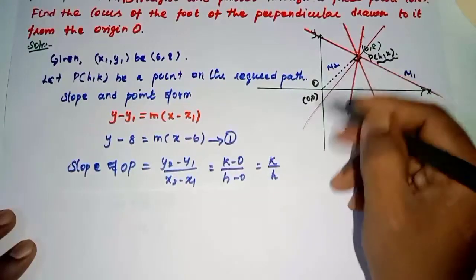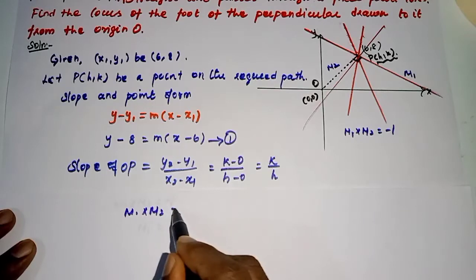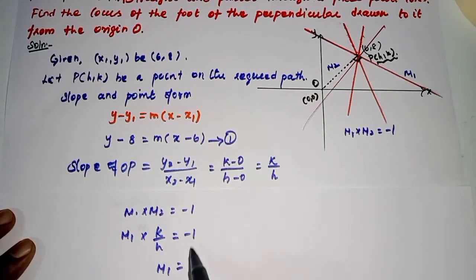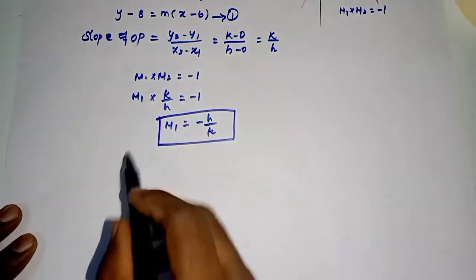See, line OP is perpendicular. We know m₁ × m₂ = -1. Now, m₁ × (k/h) = -1. M₁ is equal to -h/k. It will change. Now we have the slope value in equation 1, so we replace it.